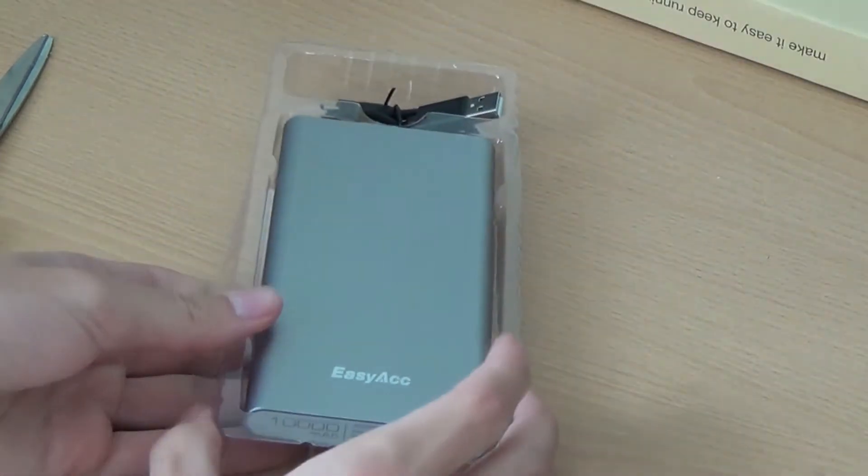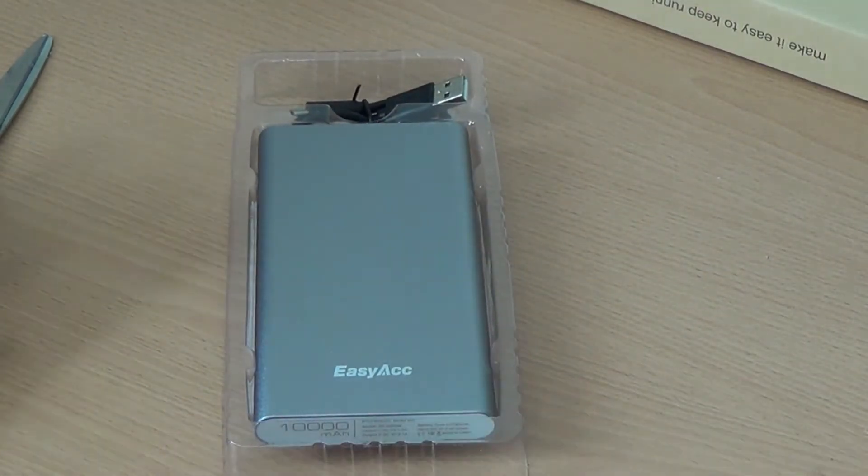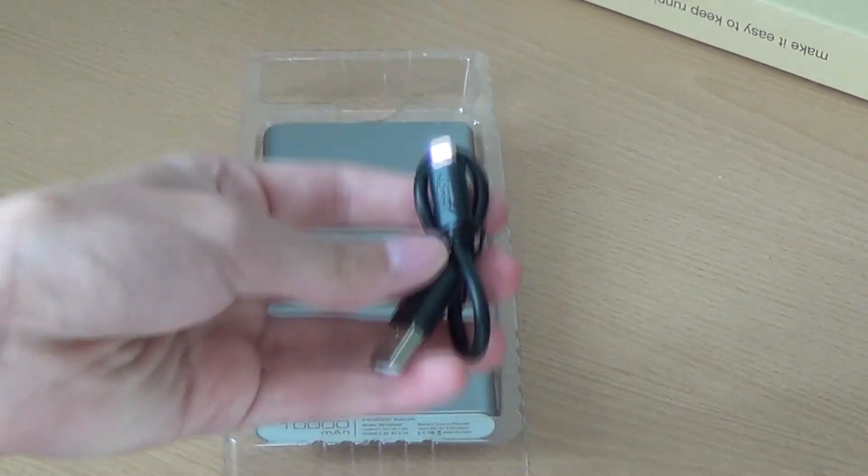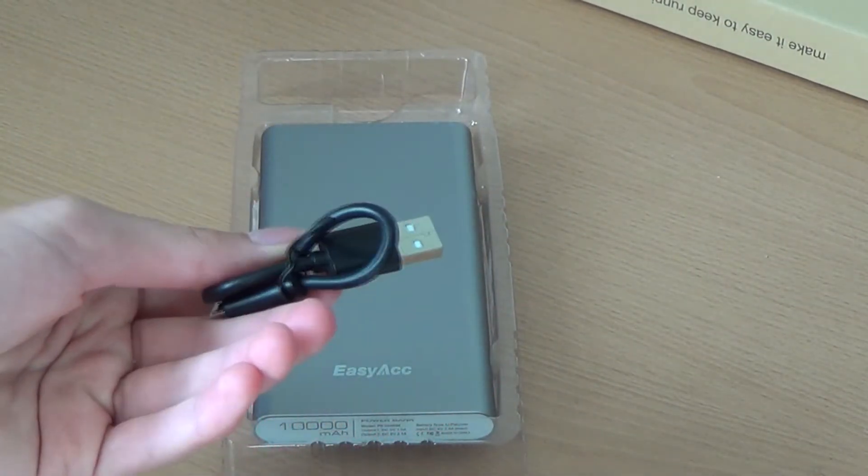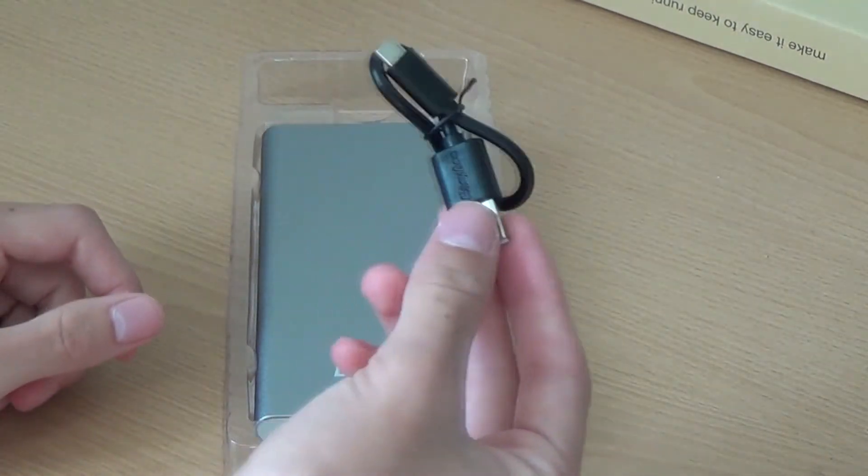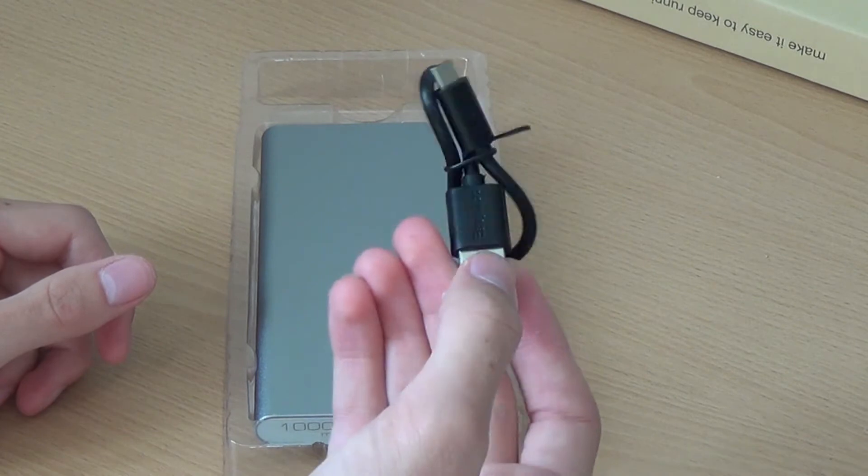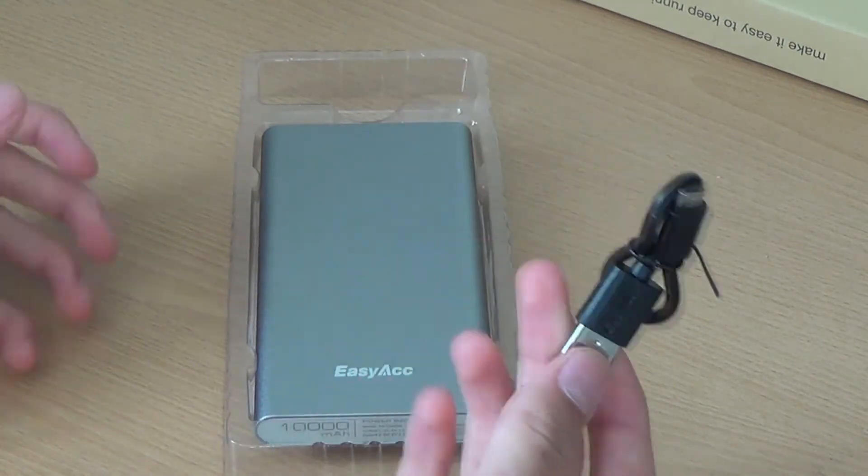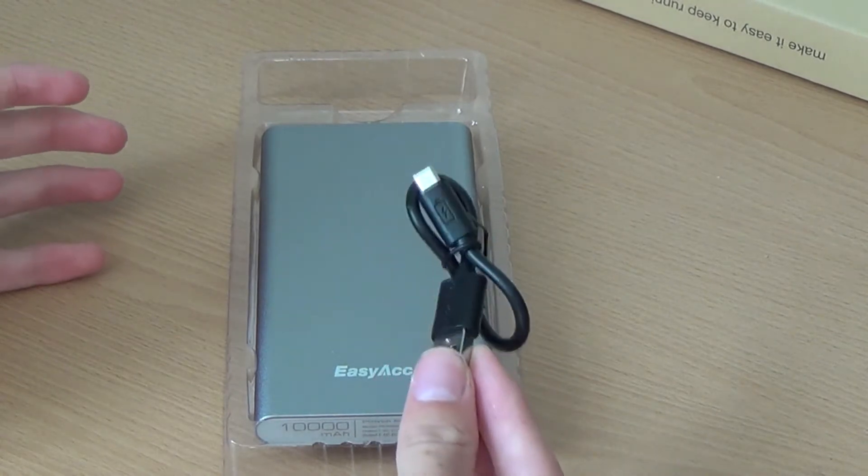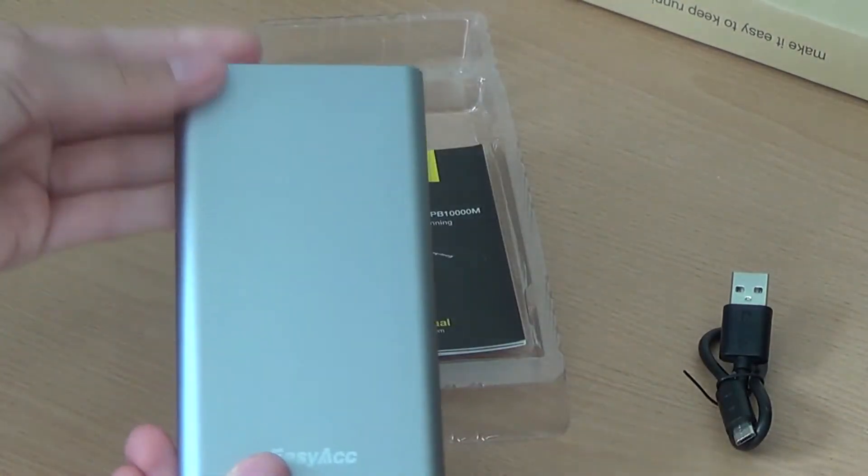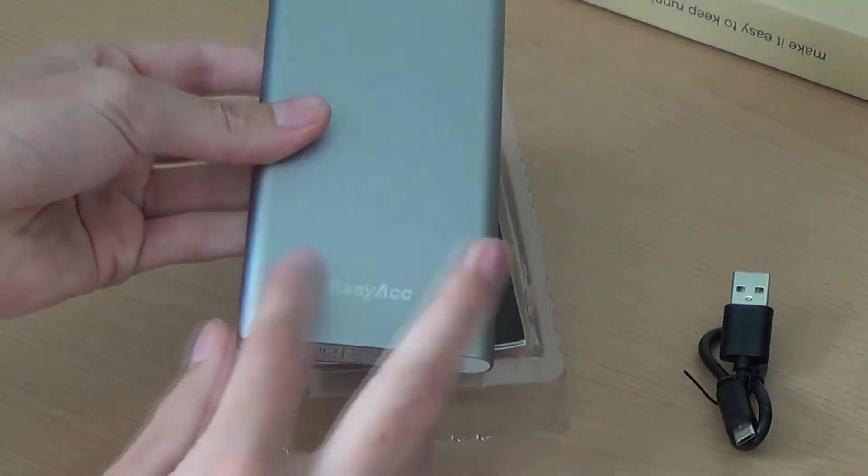We've got included in here one USB charging cable. This is to charge up the power bank, of course. You will need to provide an external wall plug for this because they don't provide one with the product. Then we've got the actual device itself, which is quite a nice, shiny little thing actually.